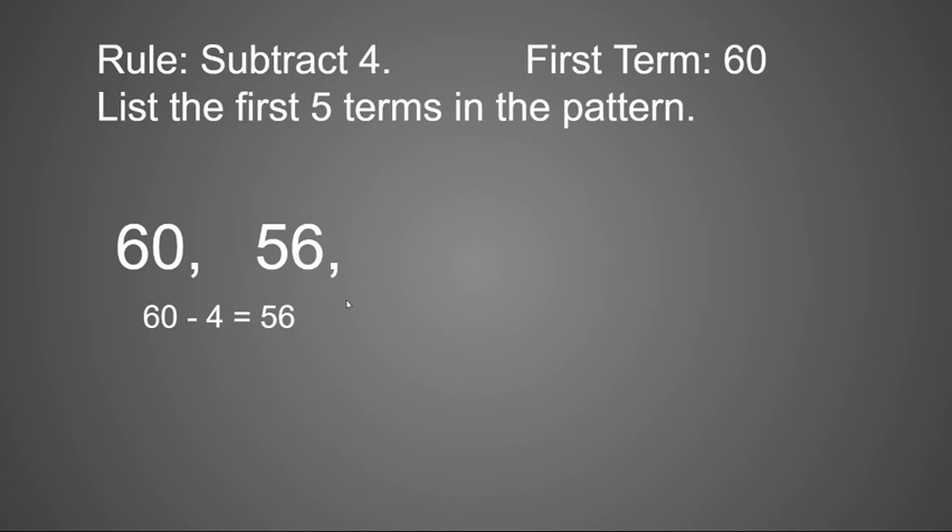Then we're going to do 56 minus 4, which is 52. So our third term is 52. And then 52 minus 4, which is 48. So 48 will be our next term, fourth term. And then 48 minus 4 is 44. So our final and fifth term is 44.